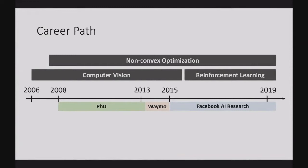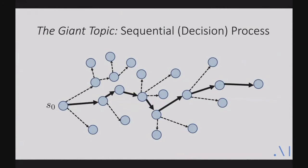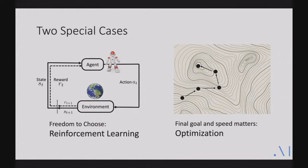Today I'll cover the giant topic of sequential decision-making, where we start from a state and find a sequence of decisions leading to good consequences. This splits into two special cases: if the agent can choose by its own will, it goes to reinforcement learning — finding the best action to maximize accumulated reward. If the agent cannot choose its destiny and we analyze overall performance, we go to optimization, where we have a non-convex landscape and try to see whether the agent can reach a local optimum.